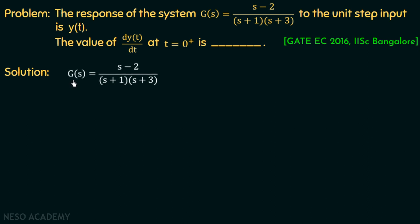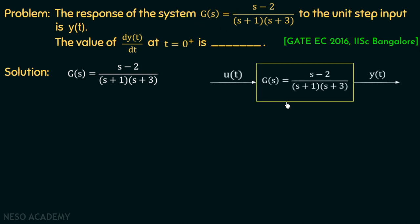Moving on to the solution — we are given a system whose transfer function G(s) = (s-2) / [(s+1)(s+3)]. We are not given information on whether this is an open-loop or closed-loop system, but since the overall transfer function is given, we can assume it is an open-loop system. We apply a unit step input and the response is y(t). We need to find dy/dt at t equal to 0+.